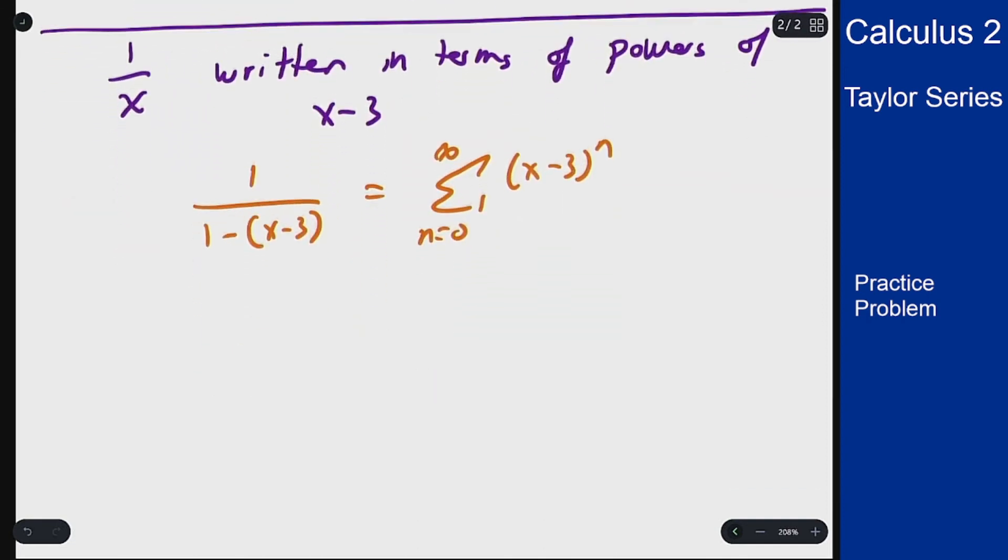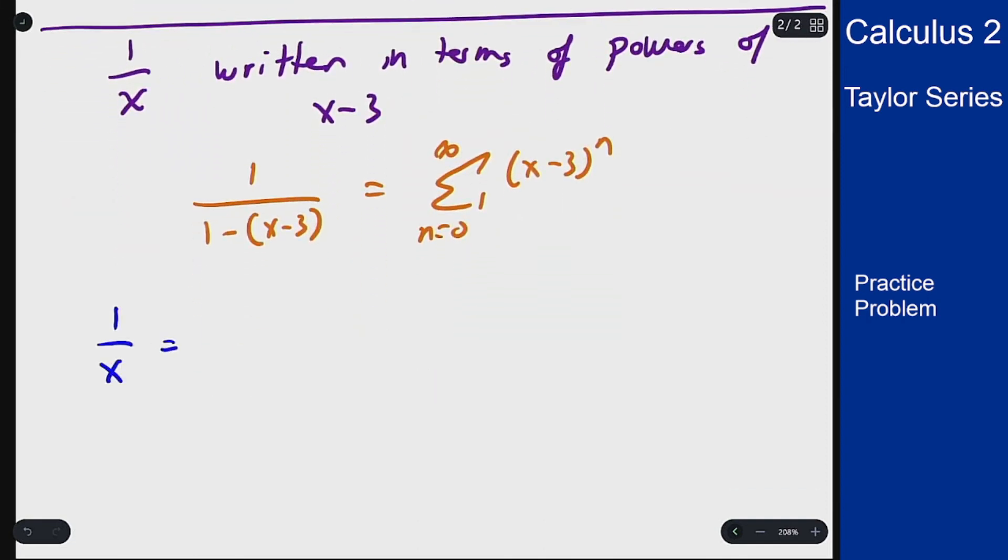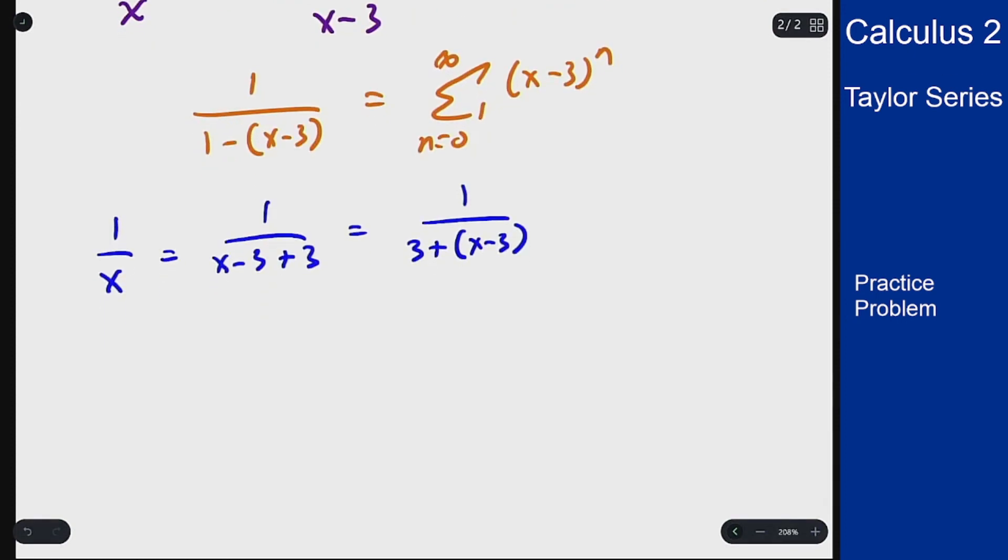So I can rewrite 1 over x as 1 over x minus 3 plus 3 or 1 over 3 plus x minus 3 and I can move a 3 out of the bottom to write this as 1 third times 1 over 1 plus x minus 3 over 3.